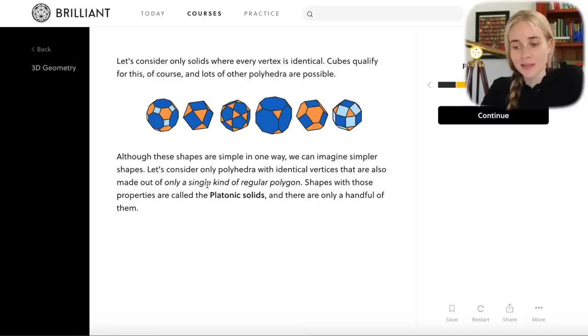Now there are lots of shapes where every vertex is identical, such as the ones in the pictures here. But we want to consider these shapes with identical vertices that are also made out of only a single kind of regular polygon. So their faces are either all squares or all triangles or all some regular shape. And the shapes with these properties are called platonic solids.